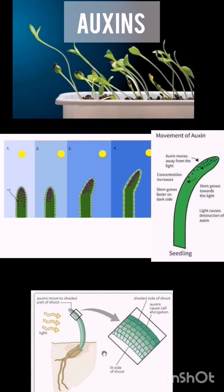Auxins are produced in shoot tips and move away from sunlight, causing plant orientation towards light. Auxins promote cell division and the stem grows faster in that direction.